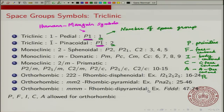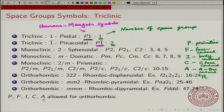For the orthorhombic system, you can have primitive, face-centered, body-centered, C-centered, or A-centered lattices. The C and A centering have to be considered with respect to the position — the first position is usually reserved for the C axis. It turns out you can have both C and A centering.